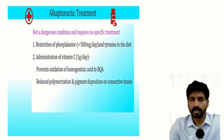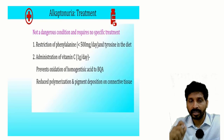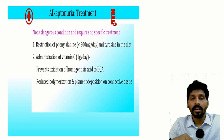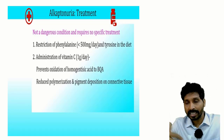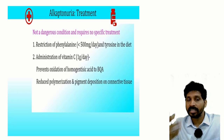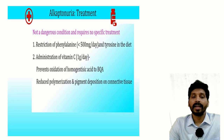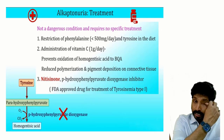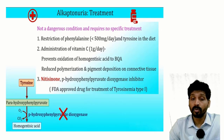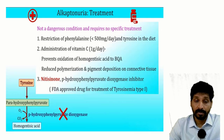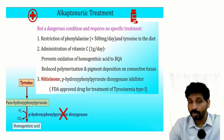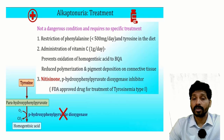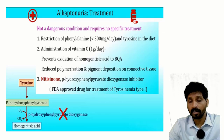Alkaptonuria is not a dangerous condition and requires no specific treatment. Management includes restriction of phenylalanine and tyrosine in the diet. Administration of vitamin C is recommended because vitamin C reacts with reducing substances, making them less reducing — this prevents oxidation of homogentisic acid to benzoquinone acetate and reduces polymerization and deposition on connective tissue. Nitisinone is an FDA-approved drug used to treat tyrosinemia type 1; as an inhibitor of 4-hydroxyphenylpyruvate dioxygenase, it prevents formation of homogentisic acid and reduces complications.